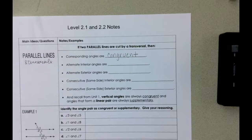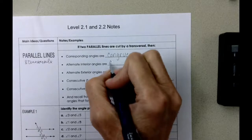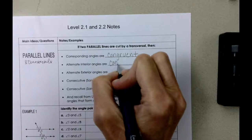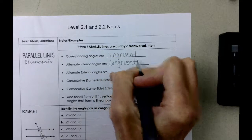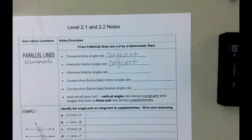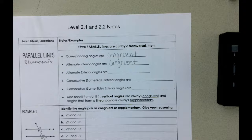Alternate interior angles are congruent. Remember, alternate means one angle is on one side and the other is on the other side. And they're interior, so they're in between the two parallel lines.